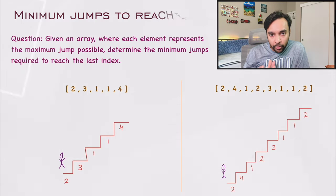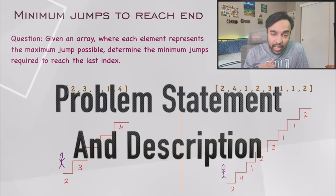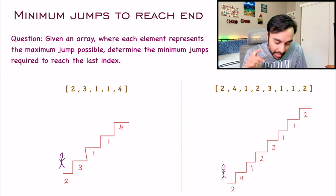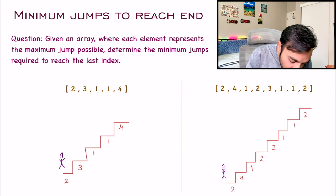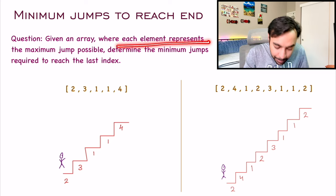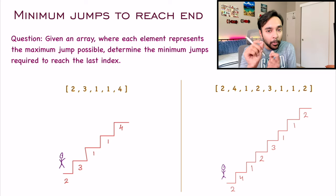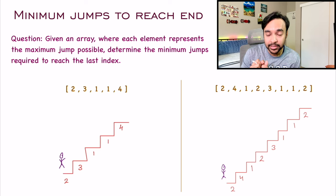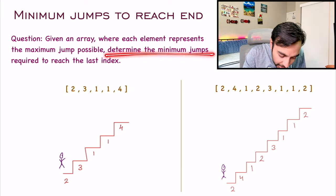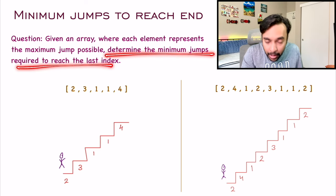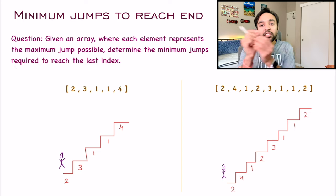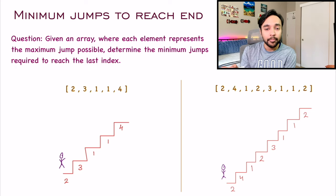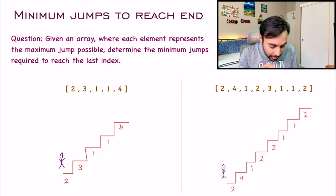Let's try to make sure that we are understanding the problem statement correctly. In this problem, you are given an array and each element represents the maximum jump possible from that particular index. And then you just have to determine the minimum number of jumps required to reach the last index. So what does this actually mean? Let us look at one of the test cases.